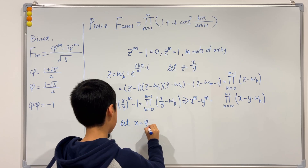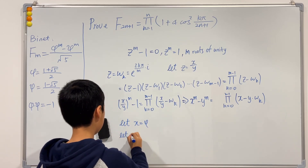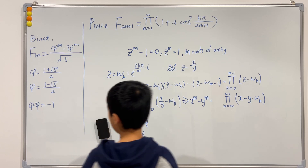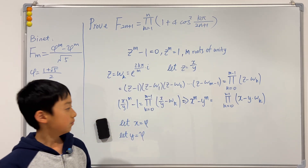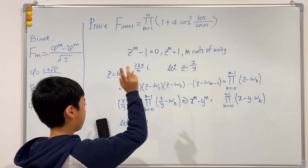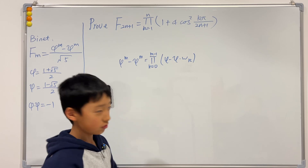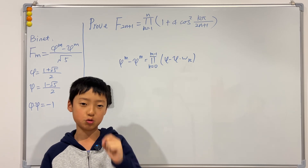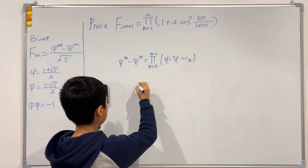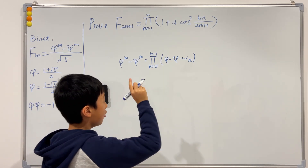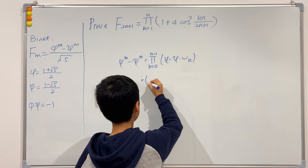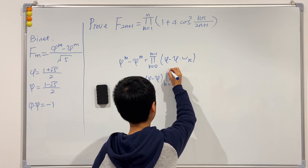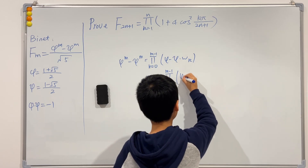Now I'm going to let x equal φ (phi) and y equal c (psi). If you don't know the values of these you can check on screen. Rewriting the equation with these substitutions, we separate out the k = 0 term from the product. Since ω₀ = 1, that term is just (φ − c), and then we multiply by the product from k = 1 to m−1 of (φ − c·ω_k).